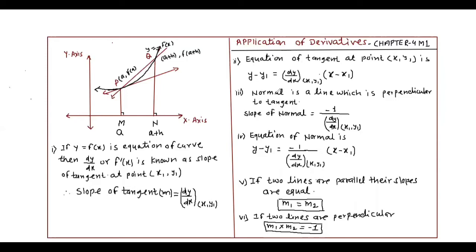Third: Normal. The normal is the line which is perpendicular to the tangent. The line perpendicular to the tangent, we call normal. The slope of normal is equal to minus 1 upon m, which means minus 1 upon dy by dx at point (x1, y1). Then the equation of normal is: y minus y1 is equal to minus 1 upon m into x minus x1.